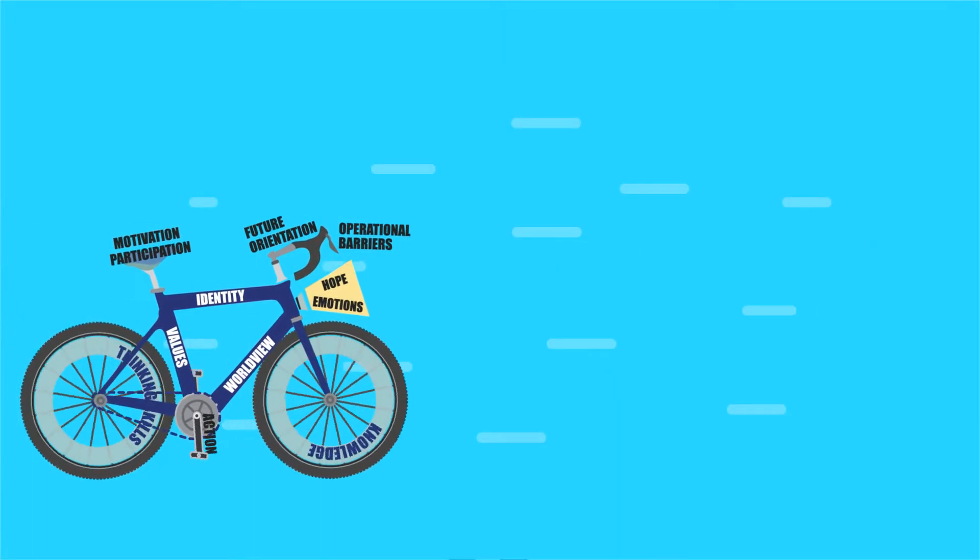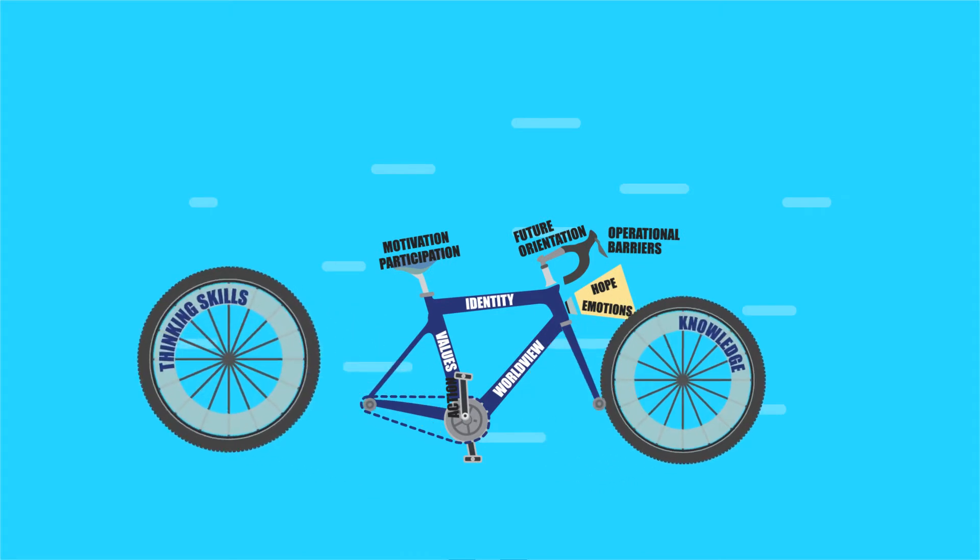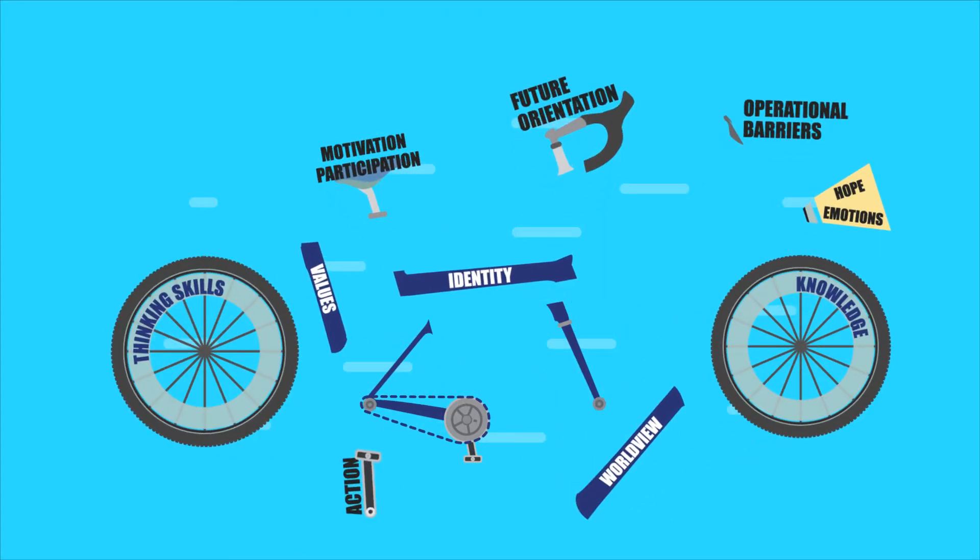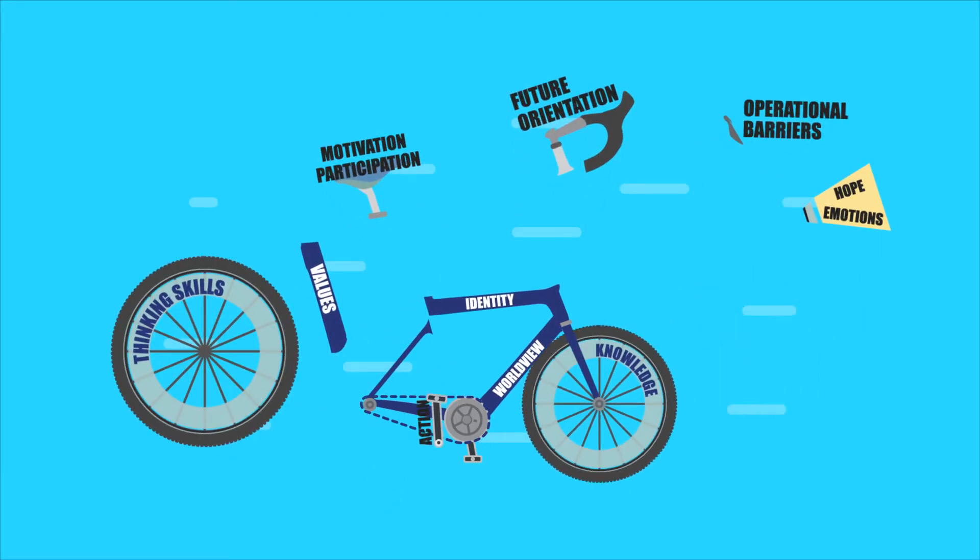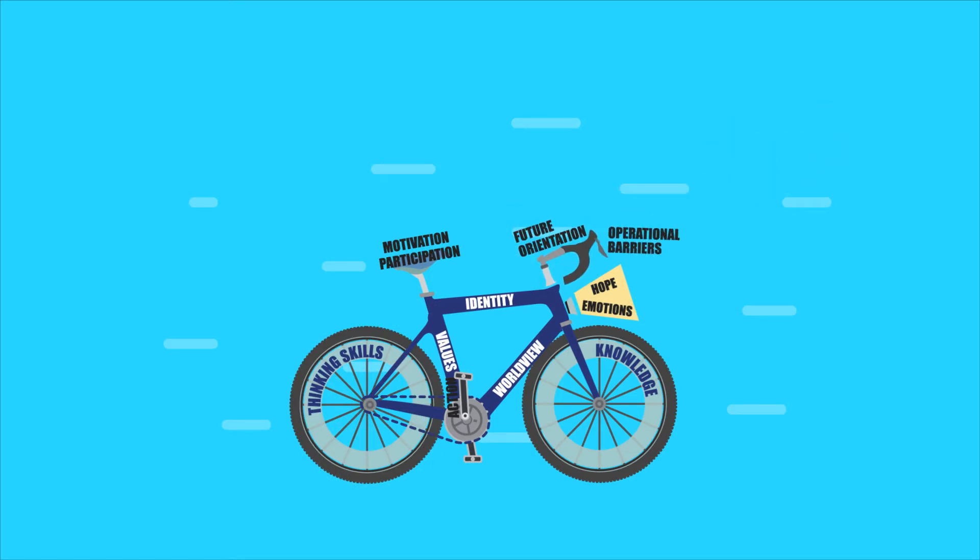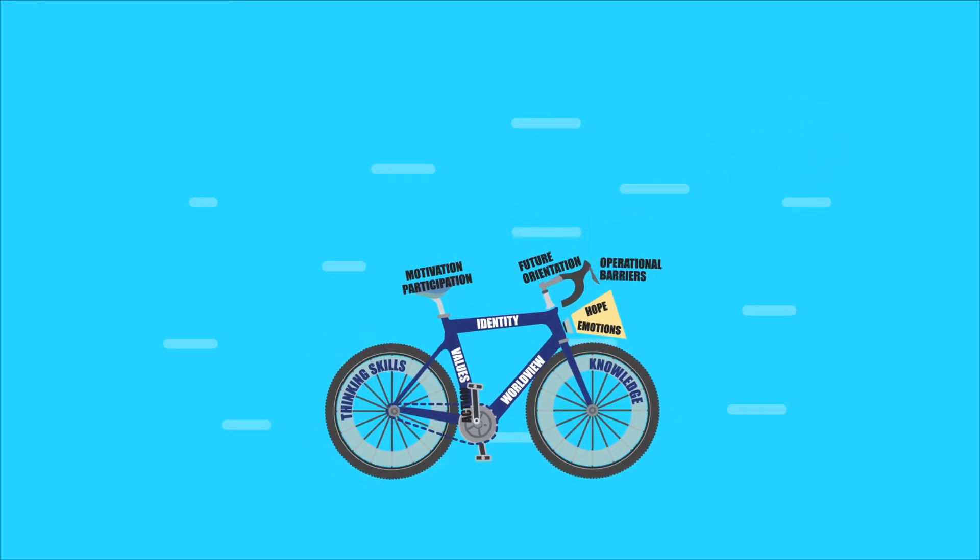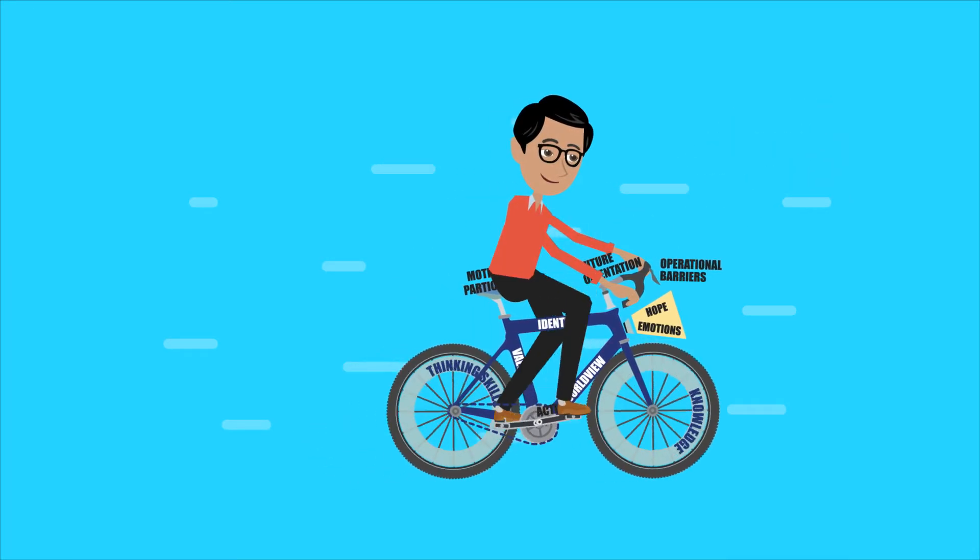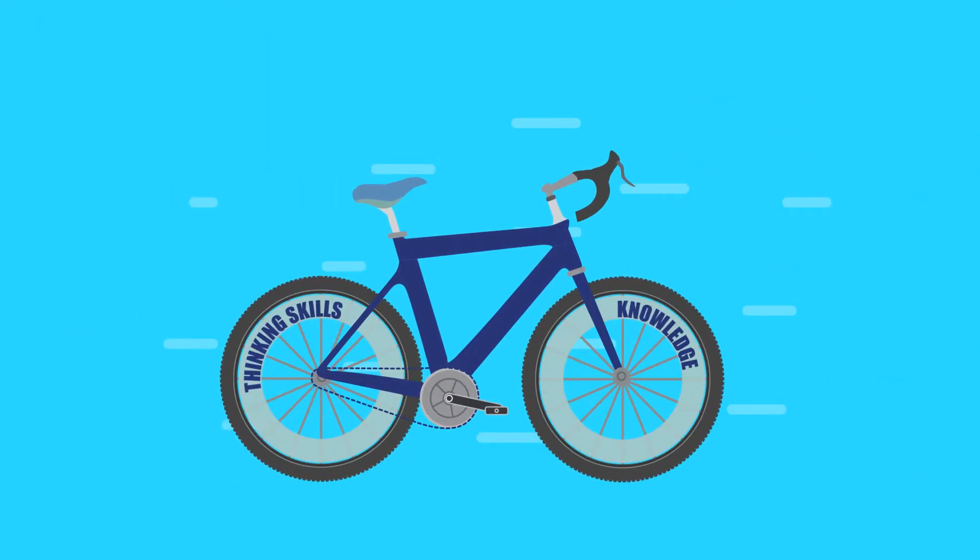To better understand climate change education, we will use the bicycle as a metaphor of the important aspects of holistic climate change education. We're using the bike because climate change education, like the bike, is one entity that requires all its parts to function. Let's take a closer look at the parts in the bicycle metaphor.